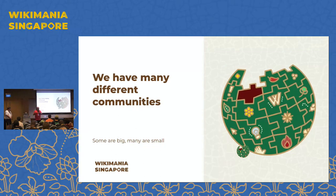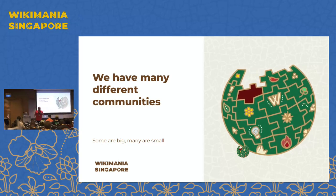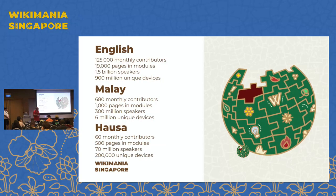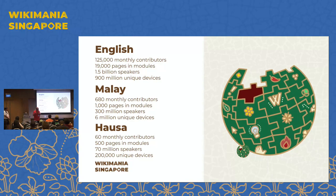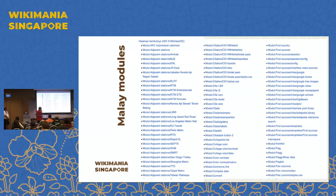We have about 770 different Wikimedia projects — all the different language Wikipedias, Wikisources, Wiktionaries, and so on. Some projects are really big, like English Wikipedia. The Malay Wikipedia has about 680 monthly contributors for more than 300 million speakers. Hausa has more than 70 million speakers but only 60 active contributors. I'm focusing on the Malay Wikipedia because we're here in Singapore.